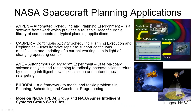NASA have also had a wide range of spacecraft with AI planning embedded in them over the years, and some examples are listed here, such as ASPEN and CASPER. More details of these projects are available at the NASA JPL and NASA AIMS websites.